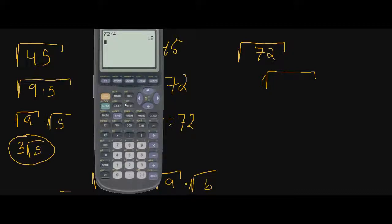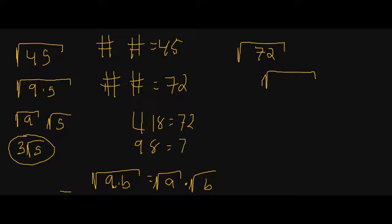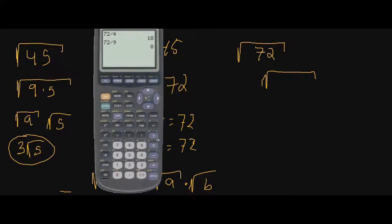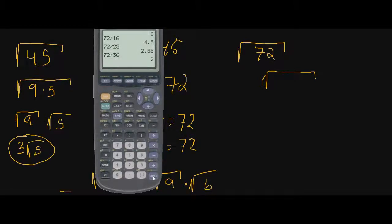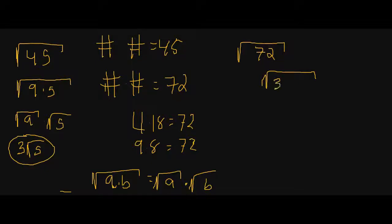The bigger the perfect square, the better. I'm thinking that 18 can probably be reduced even further, so I'll keep going. 72 divided by 9 gives 9 times 8 — 9 is a perfect square, but the square root of 8 can still be reduced further. I'll divide by 16 — that doesn't work. 72 divided by 25 — that doesn't work either. And then... oh, look at that! We have 36 times 2.